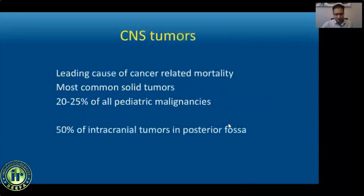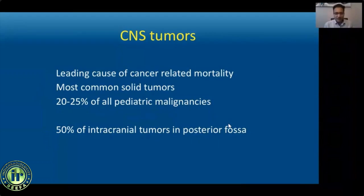Central nervous system tumors are the leading cause of cancer-related mortality in children. These are the most common solid tumors in children, second only to leukemia and lymphoma, and they account for 20 to 25 percent of all pediatric cancers. Of the CNS tumors, posterior fossa tumors are a particularly important subgroup, accounting for about 50 percent of all intracranial pediatric tumors.